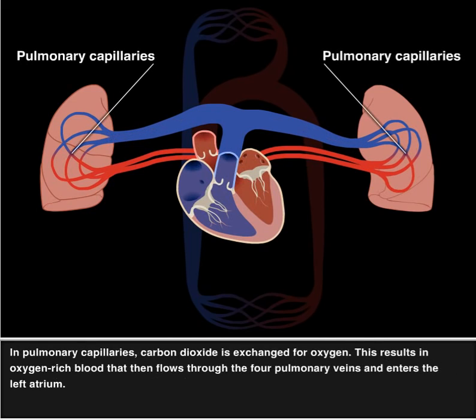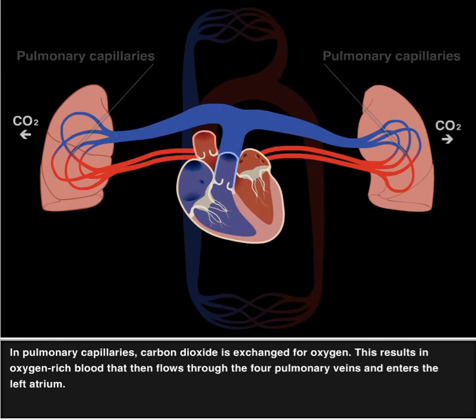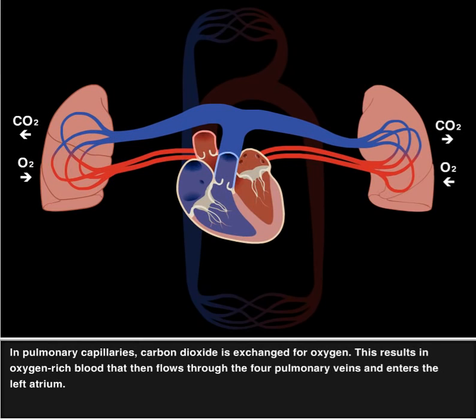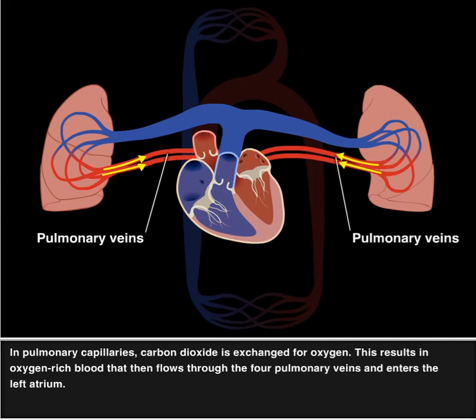In the pulmonary capillaries, carbon dioxide is exchanged for oxygen. This results in oxygen-rich blood that then flows through the four pulmonary veins and enters the left atrium.